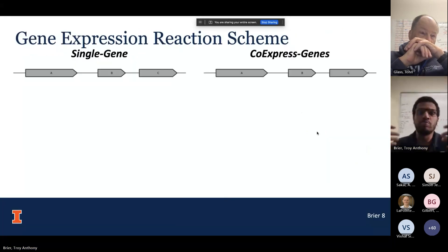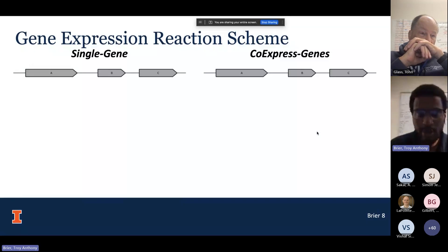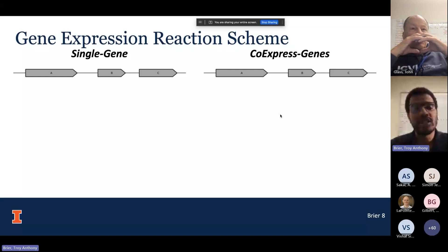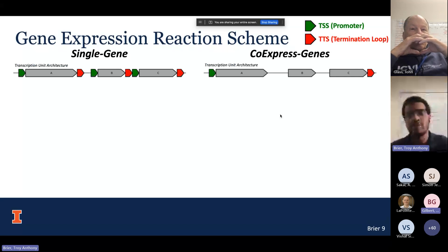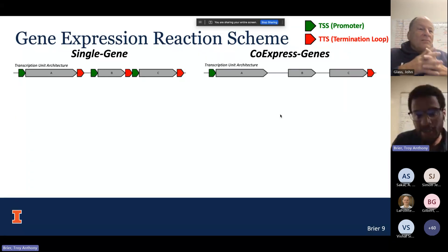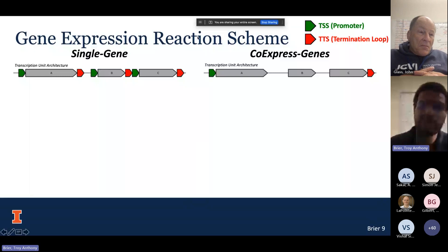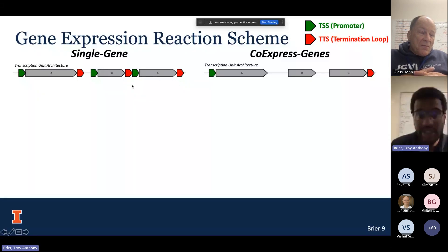To simulate transcription, you need a set of interactions. In the Cell paper (Thornburg et al. 2020), we used a proxy promoter strength to modify kinetics. In this case, I'm dictating the transcription events based on allowing for single gene expression and co-expression. That's determined by some previous transcriptomics work and computational predictions of different motifs within SYN3A — identifying promoters, termination loops, and outlining transcription events. In the single gene case, you have three transcription events that evolve each of the three genes individually. In the co-expression case, all three genes would be expressed at the same time — think of it like an operon.